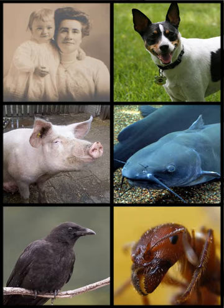Most bear species are omnivores, but individual diets can range from almost exclusively herbivorous to almost exclusively carnivorous, depending on what food sources are available locally and seasonally. Polar bears are classified as carnivores, both taxonomically — they are in the order carnivora — and behaviorally, as they subsist on a largely carnivorous diet. Wolf subspecies including wolves, dogs, dingoes, and coyotes eat some plant matter, but they have a general preference and are evolutionarily geared towards meat.